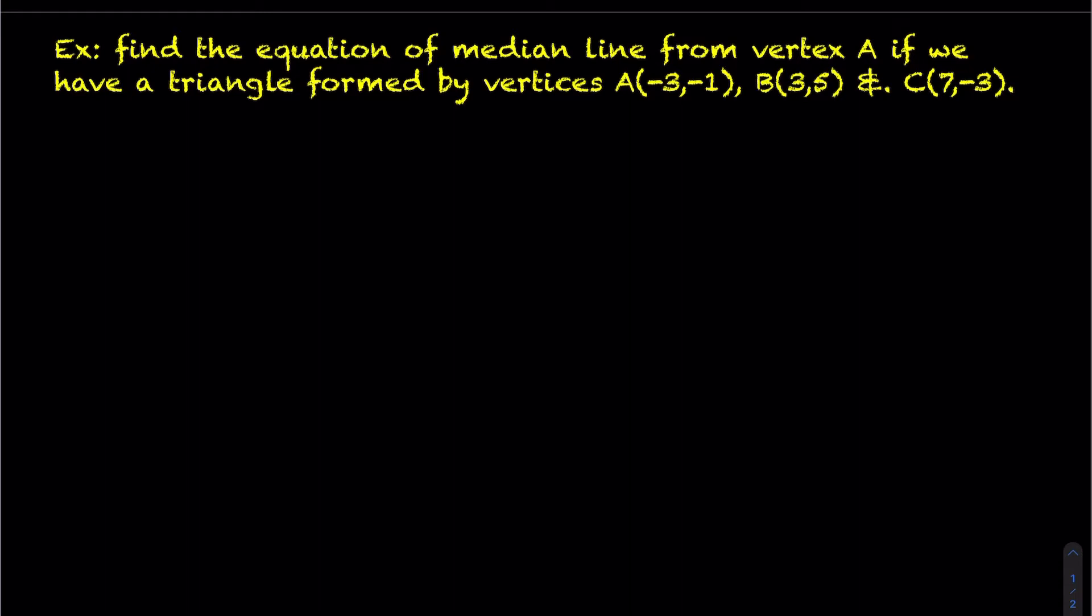So this question here says, find the median line from vertex A if we have a triangle formed by the following three vertices. Okay, so to start us off here, let's just do a little sketch as to what this triangle looks like. Just getting a rough idea of where all these points exist. So I have point A is (-3, -1), so maybe right about there is point A. Point B is (3, 5), so maybe right about here. And point C is going to be (7, -3), so maybe right about there. So if I connect these three points together, it's going to form a triangle.